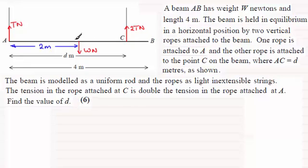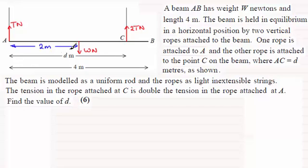When it comes to solving questions on rigid bodies in equilibrium, what we tend to do is resolve — resolve in a vertical sense for a question like this, because there are no horizontal forces. So we don't need to resolve horizontally. We resolve vertically and then we take moments about any point on the beam, and that will allow us to create a couple of equations where we should be able to solve simultaneously for d.